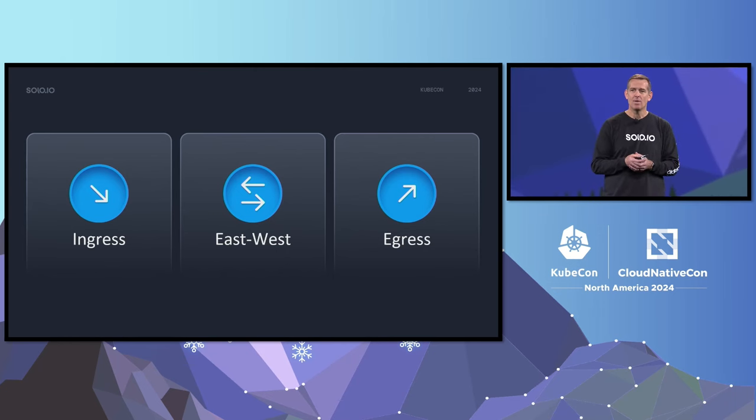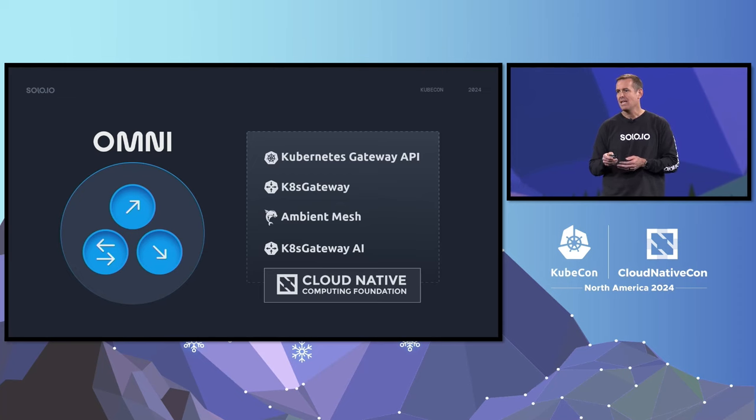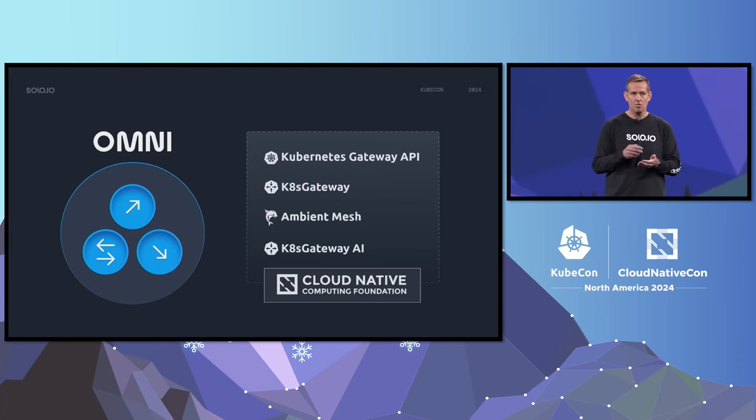To summarize, today we talked about groundbreaking community announcements around three distinct use cases: ingress, east-west, and egress. Three distinct use cases that we believe have a common solution pattern that we call OmniGateway — a consistent and uniform approach to gateway use cases across ingress, egress, and east-west. More importantly, with the contribution of K8s Gateway to the CNCF, Kubernetes users can now implement the OmniGateway pattern using open source and open standards that are all part of the CNCF. Please come by our booth — we have great swag, hands-on labs, engineers, book signings, the whole nine yards. Thanks very much for your time and we look forward to seeing you at the booth.